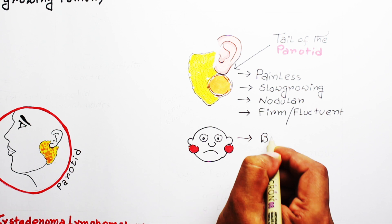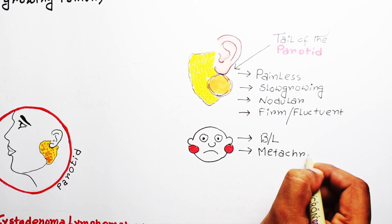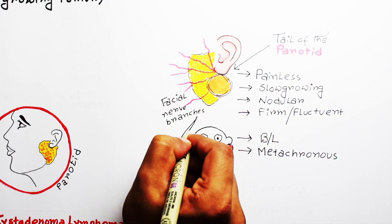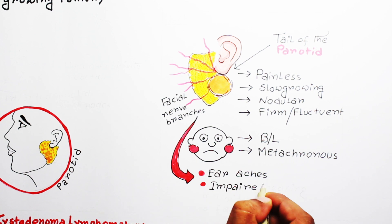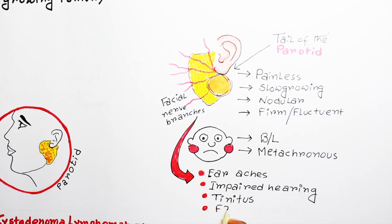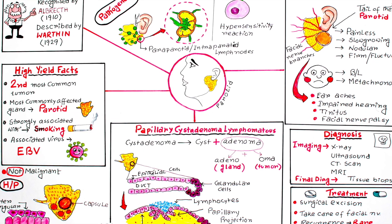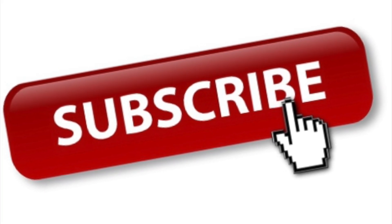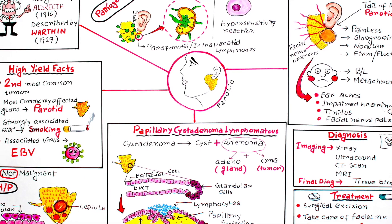One unique feature is the tendency of Warthin's tumor to occur bilaterally. Interestingly, most of these bilateral tumors do not occur simultaneously but are metachronous, meaning they may occur at different times. Compression of nerves passing through the parotid gland can cause auricular pain, impaired hearing, tinnitus, or even facial nerve palsy.